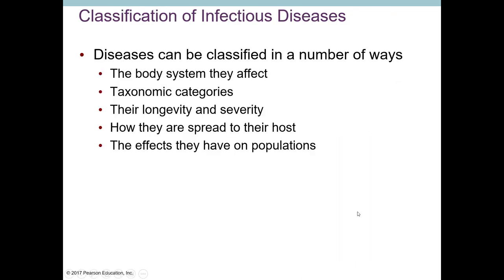There are different ways to classify a disease, and one disease could be classified into several different categories depending on what aspect you're focusing on. You can classify by body system — respiratory disease, cardiac disease, urinary tract disease — or by taxonomy: is it a virus, is it a protozoan? The category of organism causing the disease is often used as a classification.